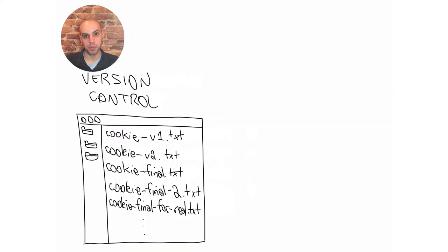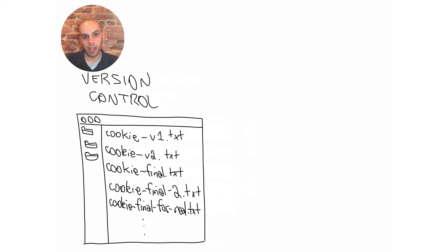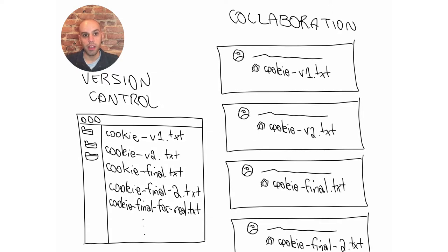Initially, everything was simple. Each recipe was a plain text file in the file system and that was it. But then, Alice wanted to track different versions of the same recipe — maybe a version in which cookies had more sugar or less cocoa. And it was hard for her to tell what was the difference between two files, who contributed what and for what reason. Things got even worse when those files became email attachments and long threads of emails back and forth.